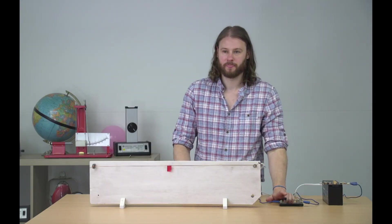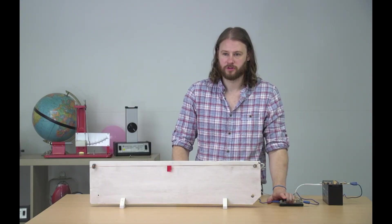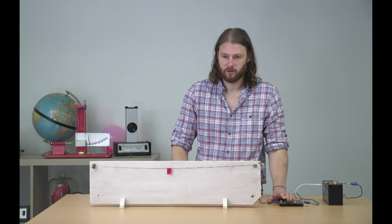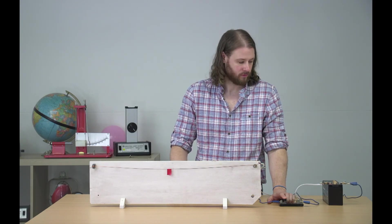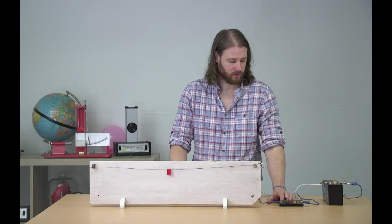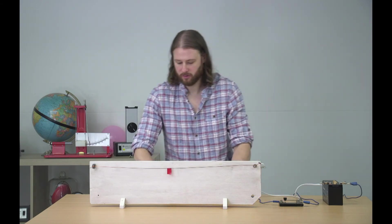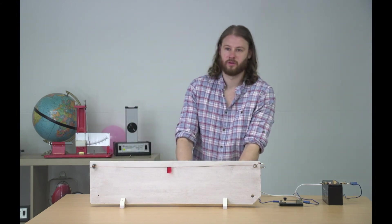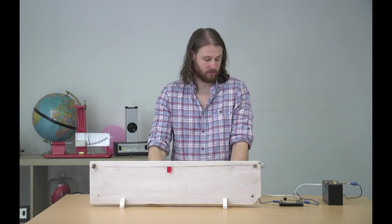Here's Neil pushing the button. The current's starting to flow, and you can see that the wire is sagging as it heats up. The little red flag there makes it easier to see how the wire is moving. Now that Neil's released the button, the wire is cooling down and it's moving back up again.